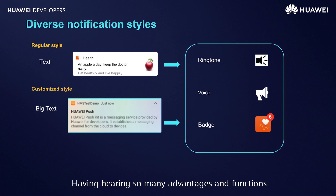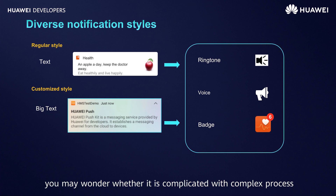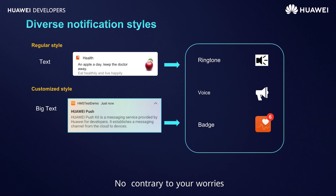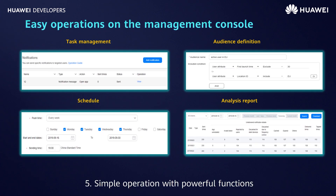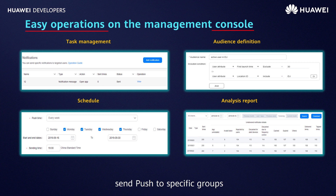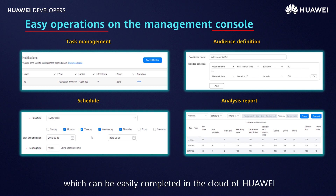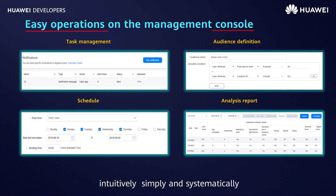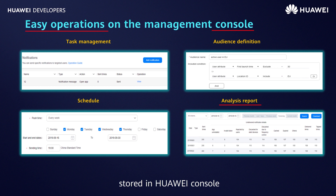Having heard so many advantages and functions, you may wonder whether it is complicated with a complex process. Contrary to your worries, here comes the last point — 5. Simple operation with powerful functions. Relying on the powerful management console, we can easily achieve various personalized requirements: group definitions, send push to specific groups, and implement it regularly, which can be easily completed in the Huawei cloud. Intuitively, simply, and systematically. In addition, there are detailed push data analysis stored in Huawei console, making you get first-hand data more easily and quickly.